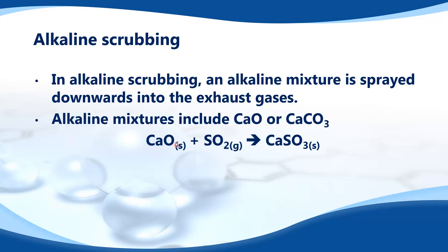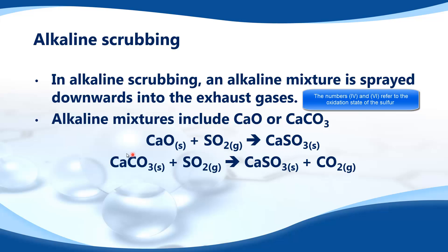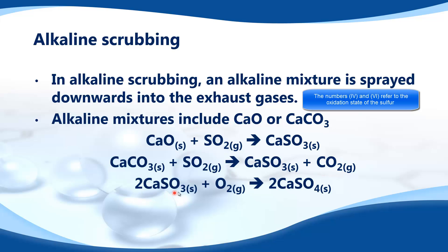In this equation, calcium oxide reacts with sulfur dioxide to give calcium sulfite (CaSO₃). Calcium carbonate reacts with sulfur dioxide to give calcium sulfite and carbon dioxide gas. The calcium sulfite can then be reacted with oxygen to give calcium sulfate (CaSO₄), which can be used to make plasterboard or disposed of in a landfill site.